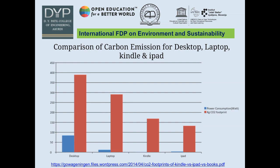A comparison of carbon emissions for desktop, laptop, Kindle, and iPad is shown. The blue bar shows power consumption and the brown bar shows CO2 footprint. A desktop consumes about 84 watts and releases 389 kg of CO2. A laptop consumes 12 watts with a 290 kg CO2 footprint. An iPad takes about 3.16 watts and 132 kg of CO2. A Kindle takes 0.7 watts and 168 kg CO2 footprint.